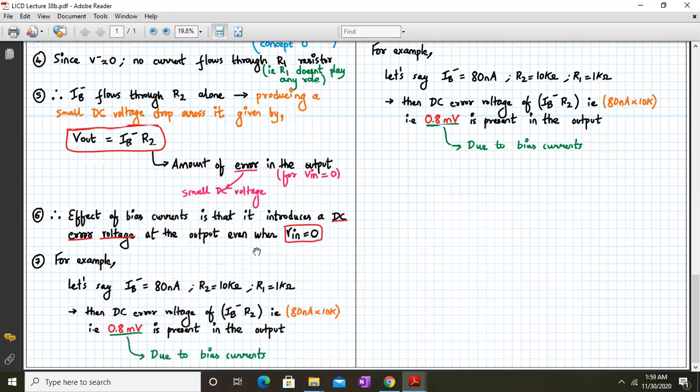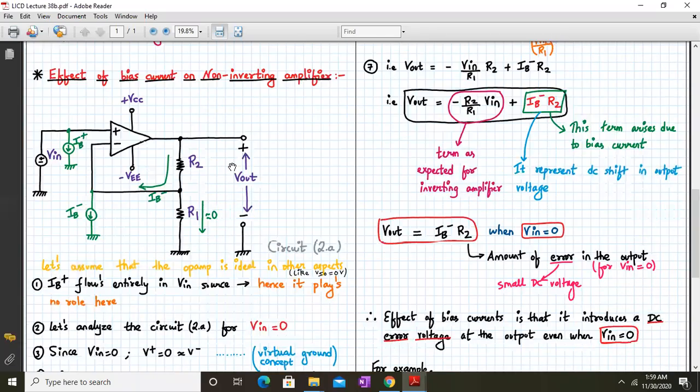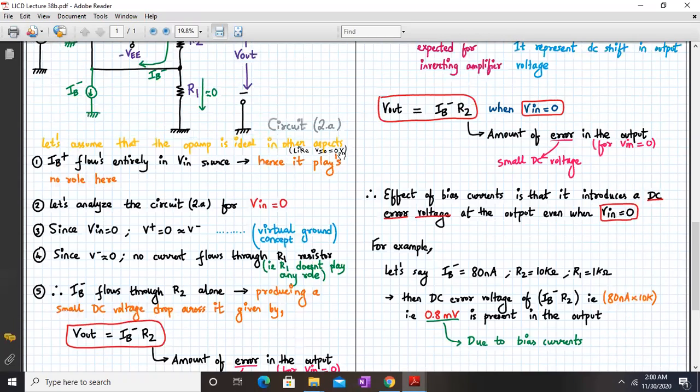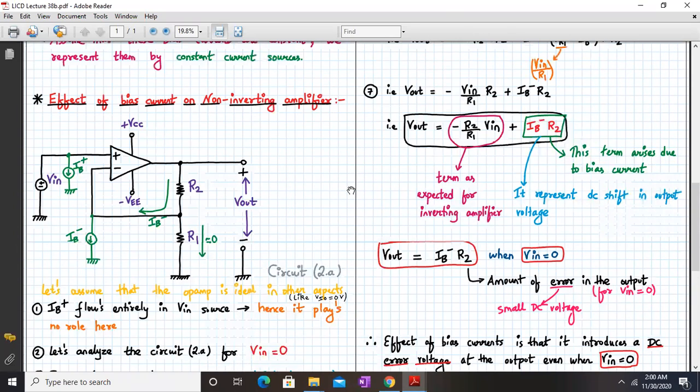So let's say Ib minus is 80 nano, we know that it's a typical value from the data sheet. And let's also consider that R2 and R1 have a value of 10k and 1k. So if Vin is equal to 0, let's calculate the error voltage. So Vout is given by Ib minus into R2. DC error voltage of 80 nano into 10k, that is equal to 0.8 millivolt DC error voltage present at the output. And this 0.8 millivolt is due to the bias current.